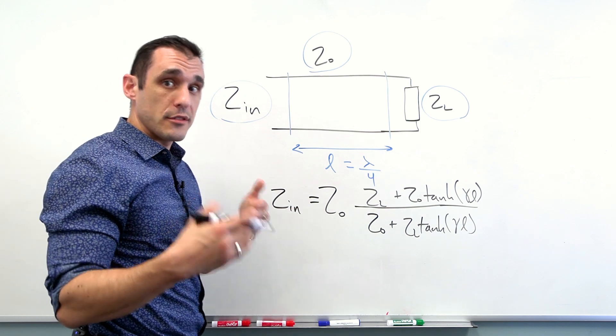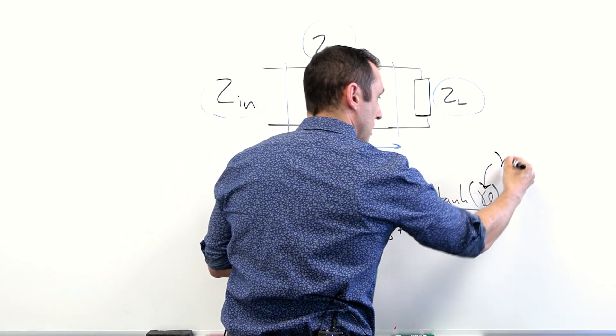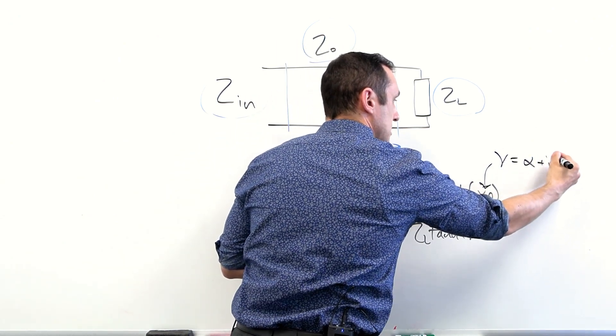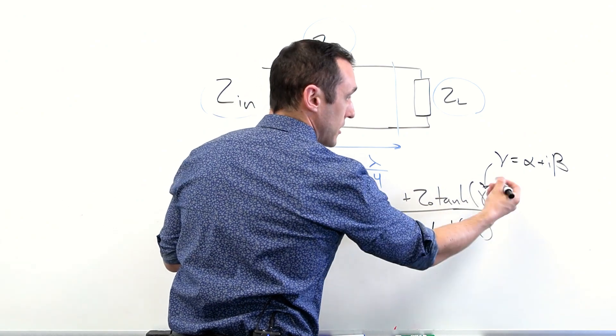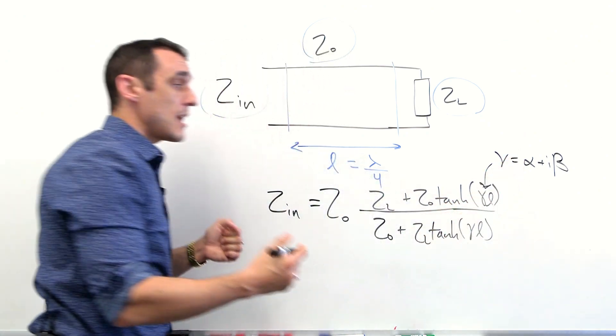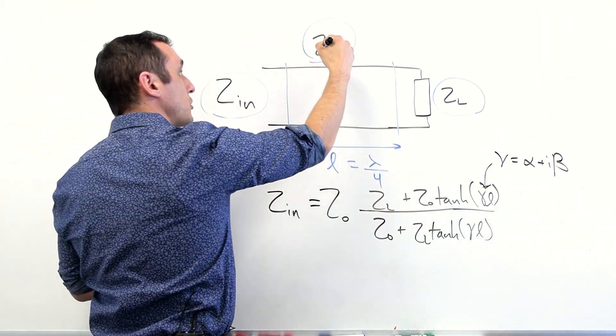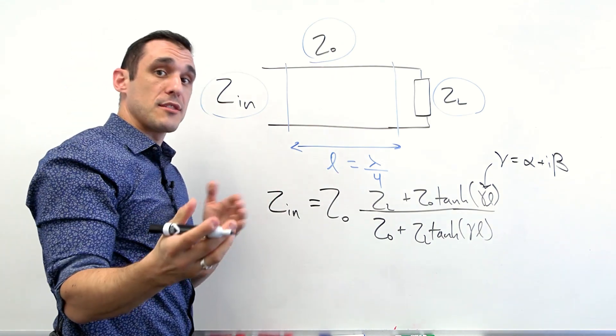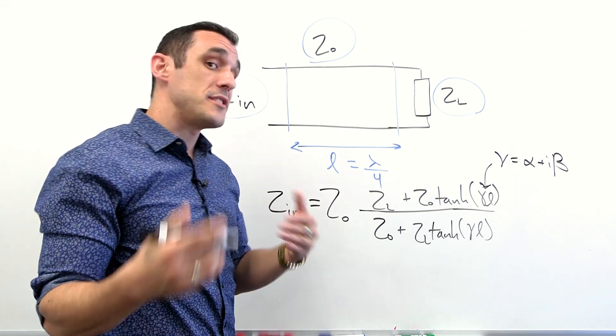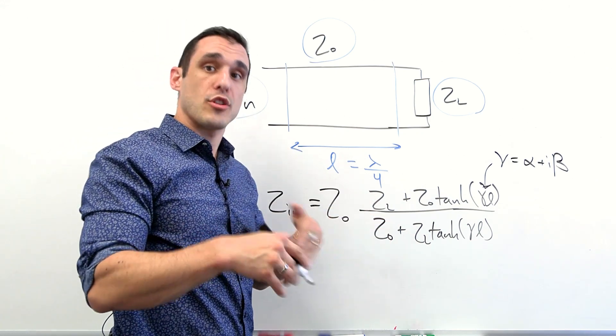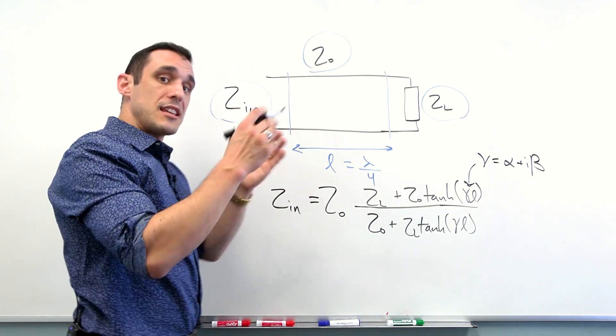What's going to happen here is if you plug this into gamma, and remember gamma has some attenuation plus some propagation constant, the tangent or hyperbolic tangent of this number is actually going to give you a complex number. So what that means is that your transmission line that you'll then have to design will have to have a complex component to it. That's actually not very easy to do on a PCB. On a PCB, the complex component of a transmission line that you design on a practical PCB is actually going to be very small.